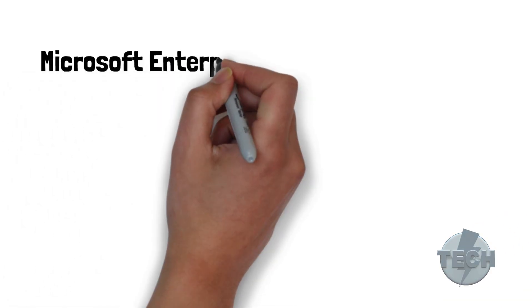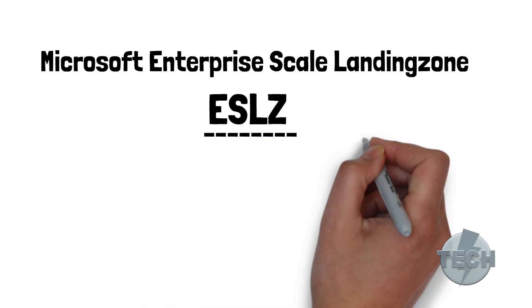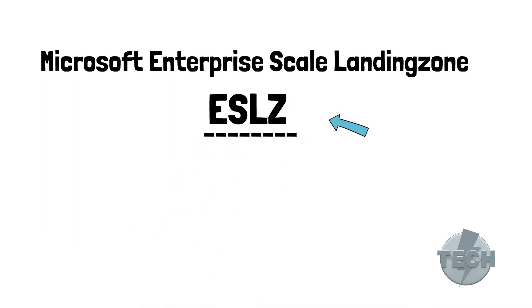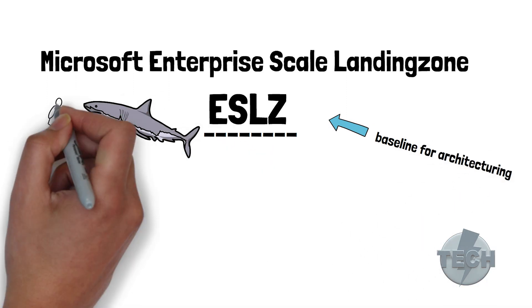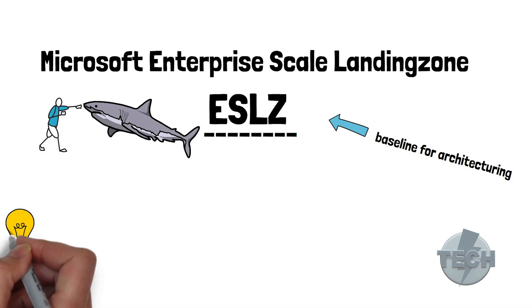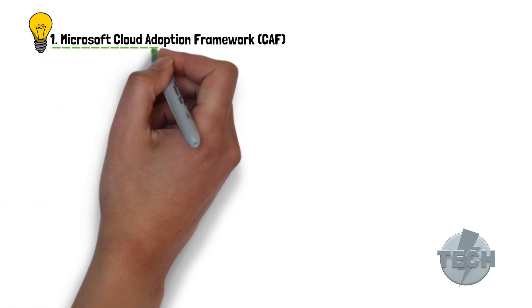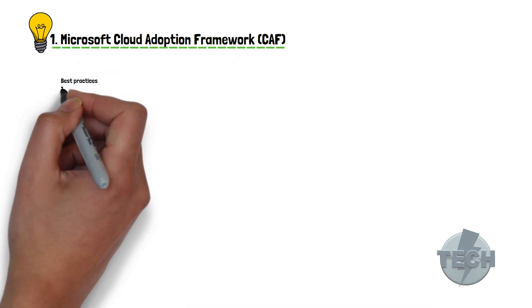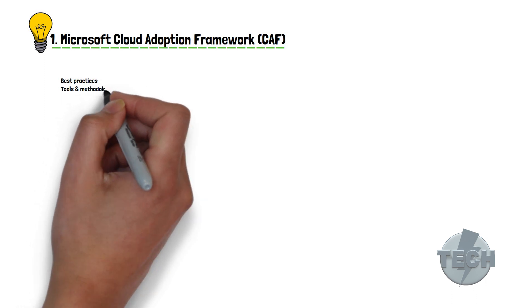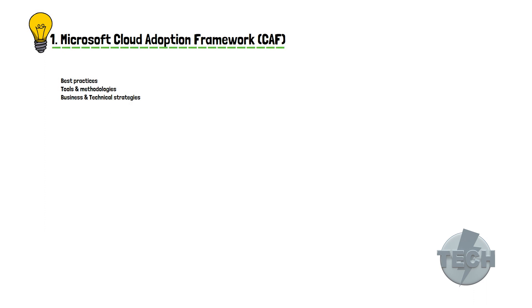The Microsoft Enterprise Scale Landing Zone, or the ESLZ as the popular guys at the party would refer to it, is the baseline for architecting in Azure. Before we dive into the deep waters and start fighting with the sharks, we will first define the general ideas. Our focus will be on these three concepts. The Microsoft Cloud Adoption Framework, CAF. The Microsoft CAF is a detailed guidance of practices, tools and methodologies to implement businesses and technological strategies for enterprises moving to the Azure cloud.